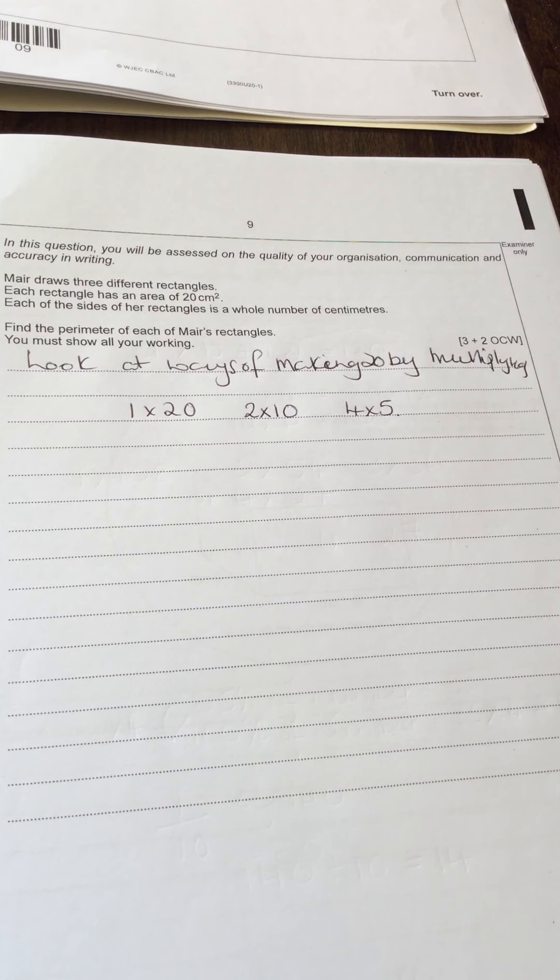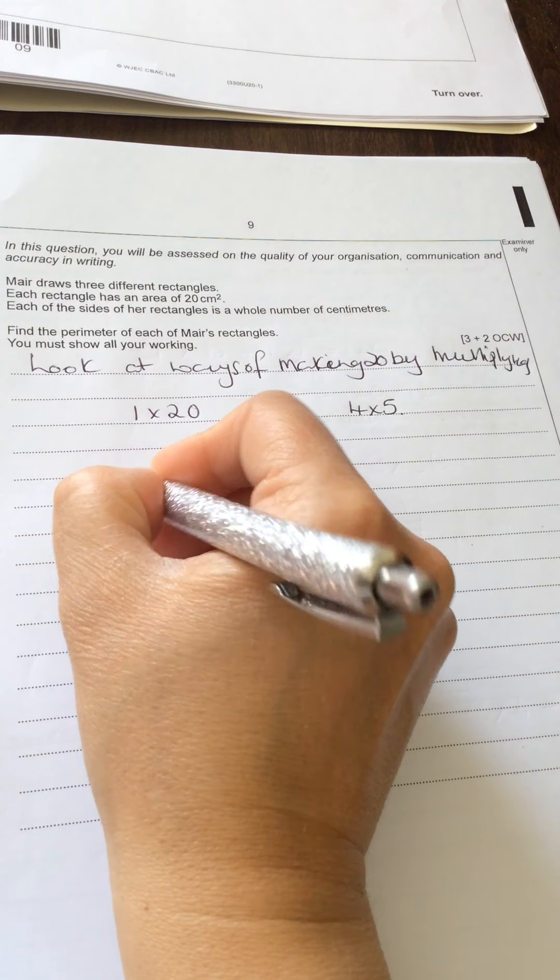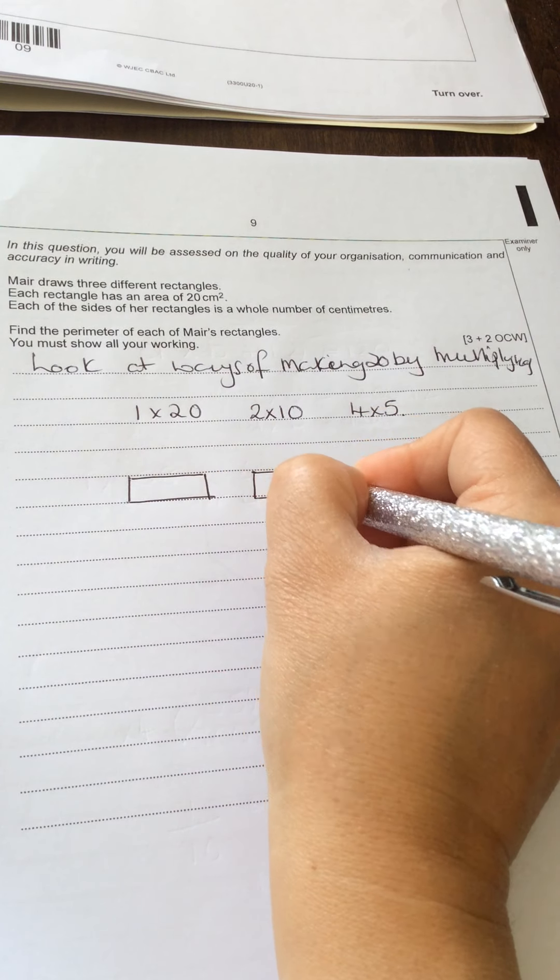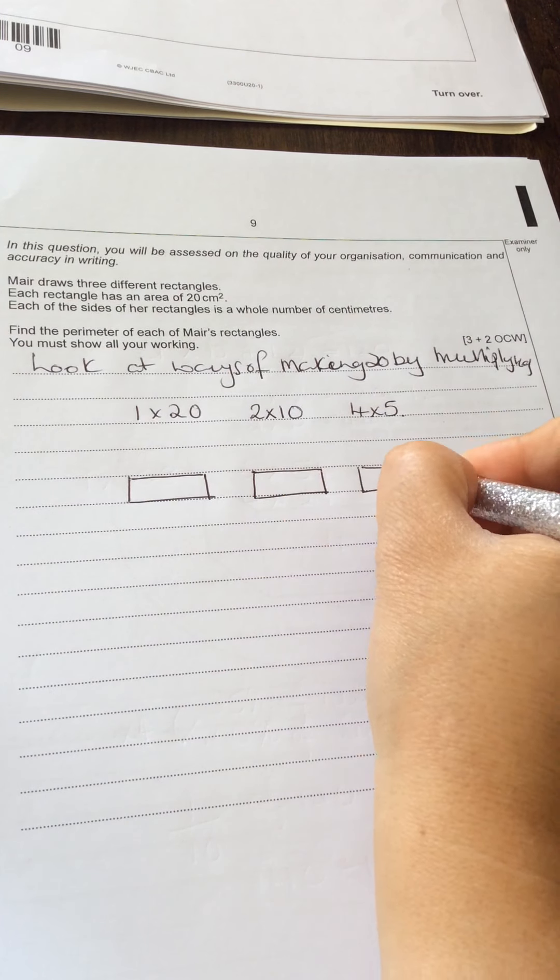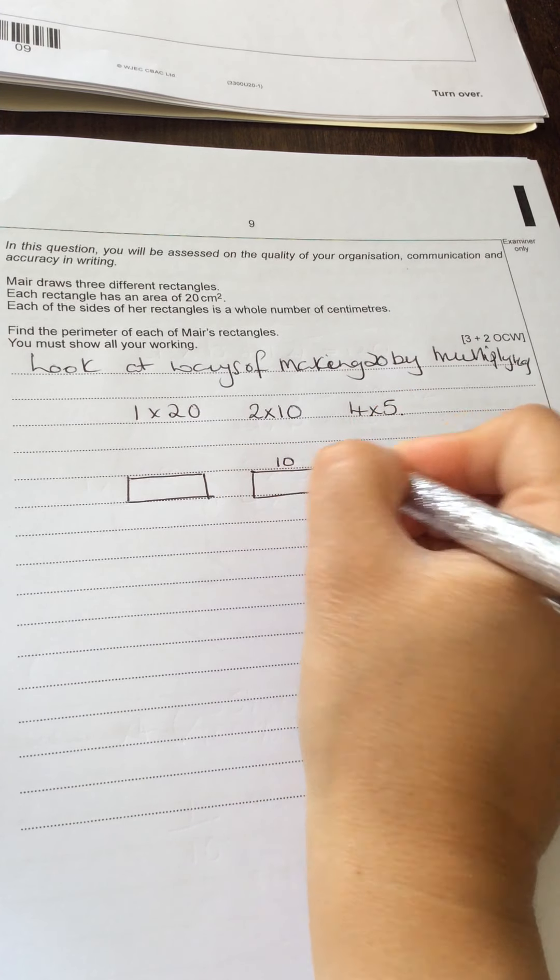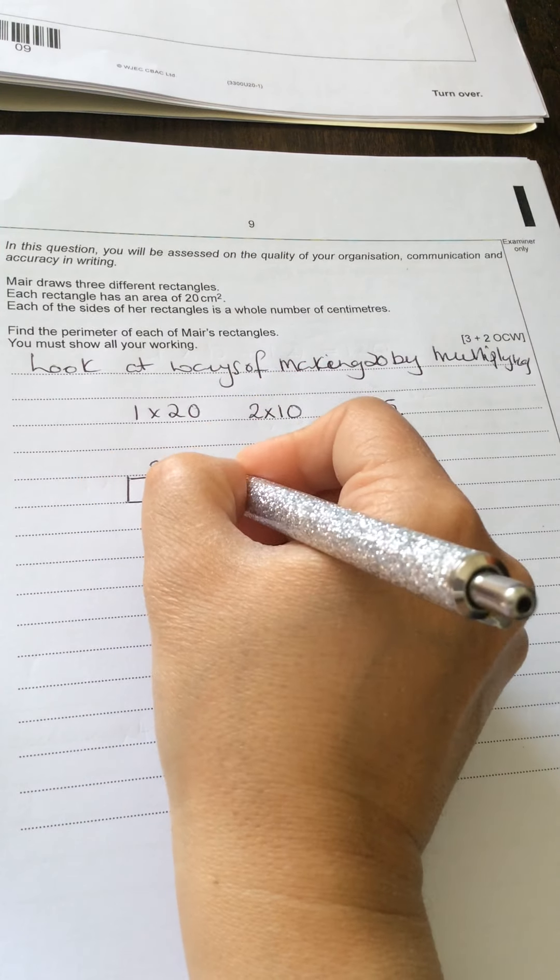What you've then got to do is I would draw them out. So I would draw my rectangles out and I'd say, right, that's going to be a 5 and a 4. That's going to be a 10 and a 2. That's going to be a 20 and a 1.